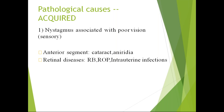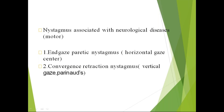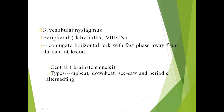In acquired nystagmus, the first type is nystagmus associated with poor vision — also called sensory nystagmus. Any media obstructing light rays from reaching the fovea can lead to sensory nystagmus. Causes include anterior segment problems, cataract, aniridia, retinal diseases, retinoblastoma, intrauterine infections, and ROP. The second type is motor nystagmus due to neurological diseases: gaze paretic nystagmus or convergence-retraction nystagmus. The third type is vestibular nystagmus, which is very important.